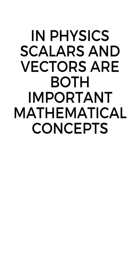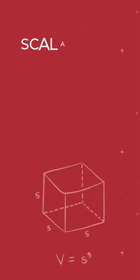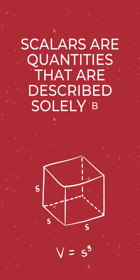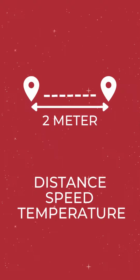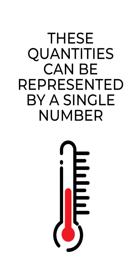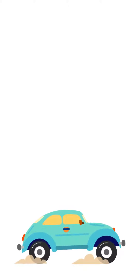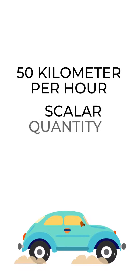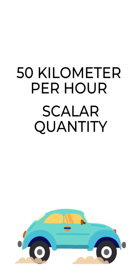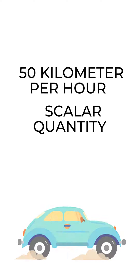Physics. Scalars and vectors are important concepts used to describe quantities that have magnitude and direction. Scalars are quantities that are described solely by their magnitude, such as distance, speed, or temperature. These quantities can be represented by a single number. For example, if you were to say that your car's speed is 50 km per hour, this is a scalar quantity because it only represents the magnitude of the car's speed.